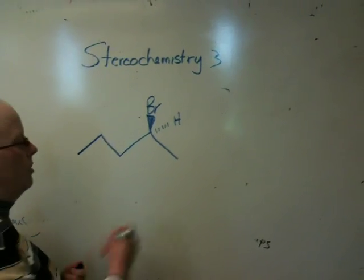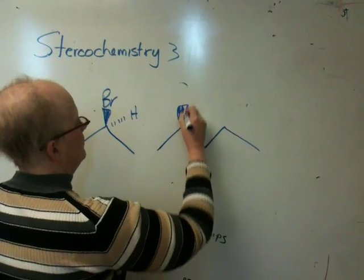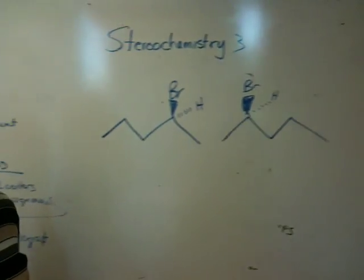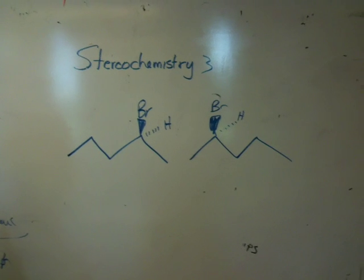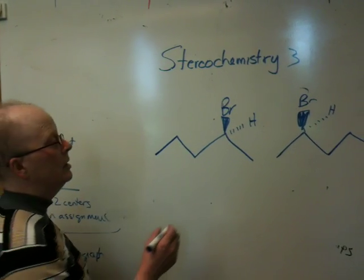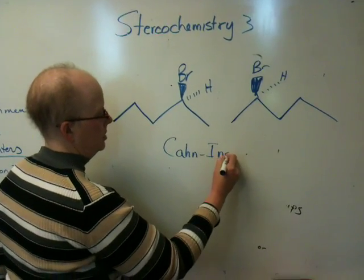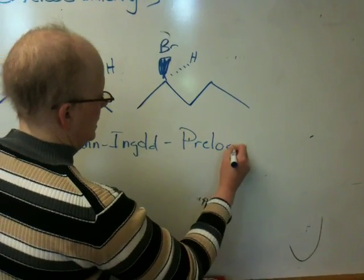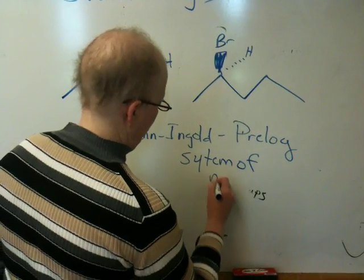Since they are different molecules, and since it is a different molecule, it needs to have a different name. What we use to name stereoisomers — enantiomers, diastereomers, which is another type you're going to learn about — we use the Cahn-Ingold-Prelog system of nomenclature.